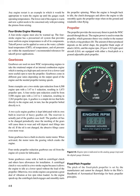Gearboxes are used on most WSC reciprocating engines to take the rotational output of an internal combustion engine turning at high RPM and convert it to a slower, more useful RPM to turn the propeller. Gearboxes come in different gear ratios depending on the output speed of the engine and the needed propeller turning speeds. For example, a two-stroke RPM reduction from 6,500 engine RPM with a 3.47:1 reduction results in 1,873 propeller RPM; a four-stroke RPM reduction from 5,500 engine RPM with a 2.43:1 reduction results in 2,263 propeller RPM. A gearbox bolts directly to the engine and has the propeller bolted directly to it.